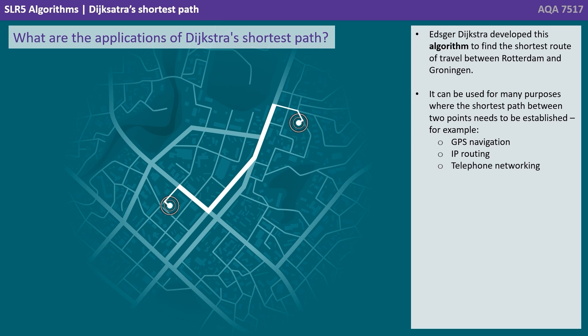Edgar Dijkstra developed this algorithm to find the shortest route of travel between Rotterdam and Groningen. It can be used for many purposes where the shortest path between two points needs to be established, for example GPS navigation, IP routing, and telephone networking.